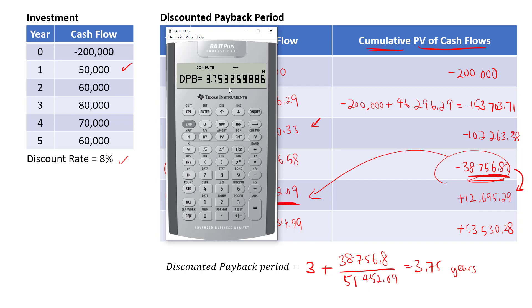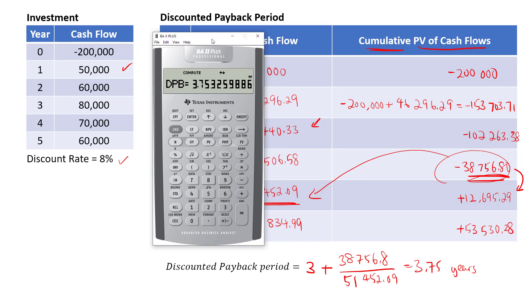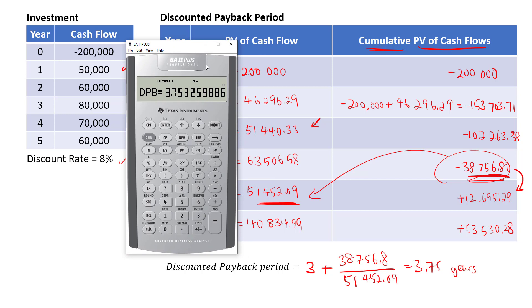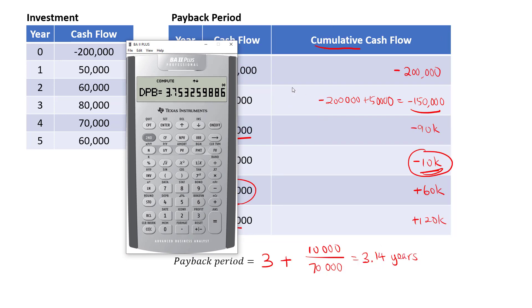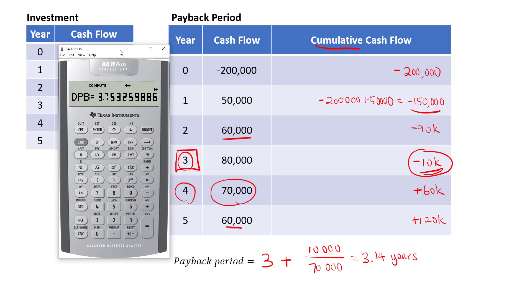If you have the professional version of the calculator, getting the payback period and discounted payback period is faster. If you only have the basic version, there's not a big problem — you can still compute it manually. It takes slightly longer depending on how many years the investment proposal is, but with practice you should be able to get it without much difficulty.